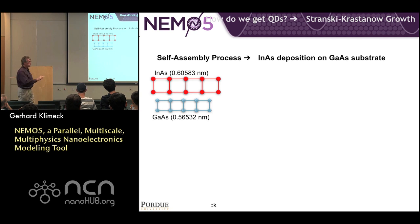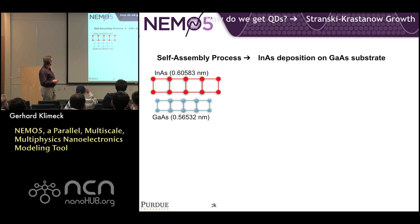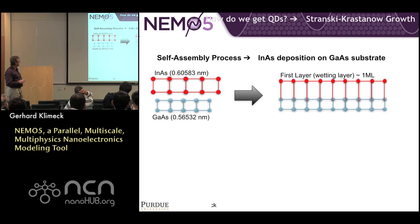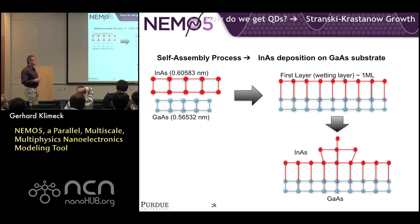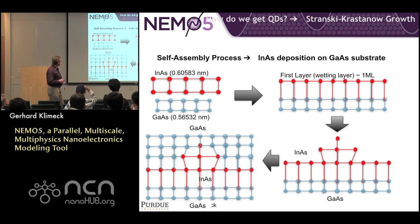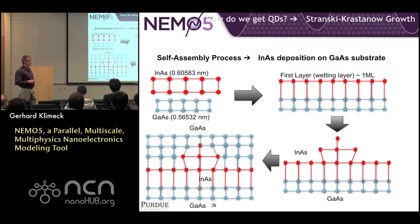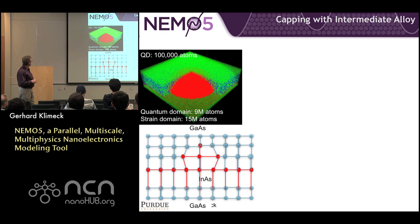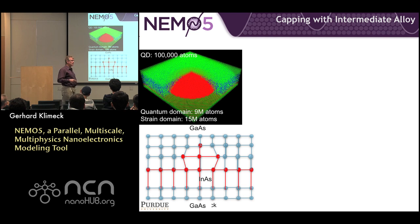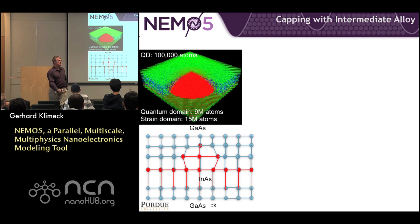How do these things grow? You take indium arsenide and grow it on top of gallium arsenide — it doesn't quite fit, it has to stretch, and if you grow too much, it clumps up. That's roughly how you get quantum dots. In reality, the strain domain may have about 15 million atoms; the electronic structure domain where electrons feel the wave function is about 9 million atoms; and the quantum dot itself may be only 100,000 atoms. The strain is hugely distributed — for a quantum dot of 5-6 nanometers high, it goes 30 nanometers down and really distorts what's underneath.